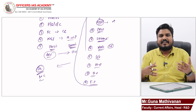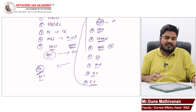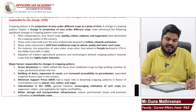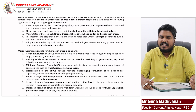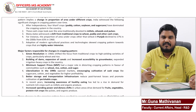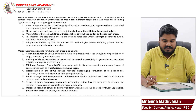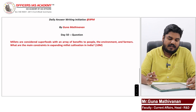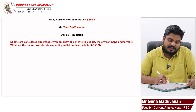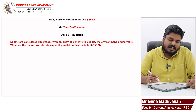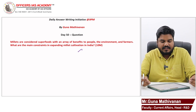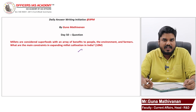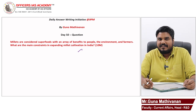That's all — I've given relatively lengthy content which you can trim according to the demand of the question. I have also given a model answer; you can go through it. The best answers will be pinned in the comment section. The question for today is: millets are considered as superfoods with an array of benefits to people, the environment, and farmers — what are the main constraints in expanding millet cultivation in India? It's a 10-marker. I hope this initiative is adding value to your preparation. See you tomorrow, bye, take care.